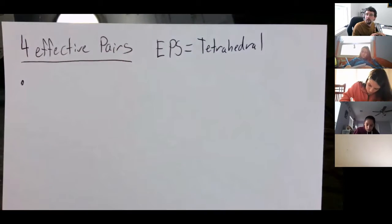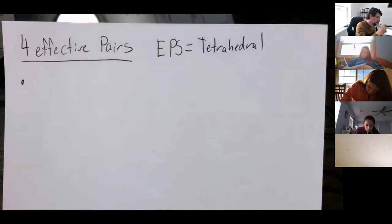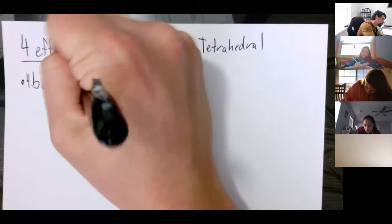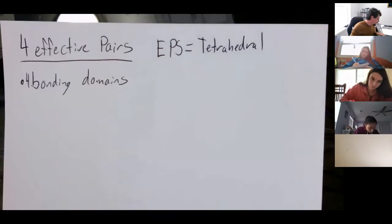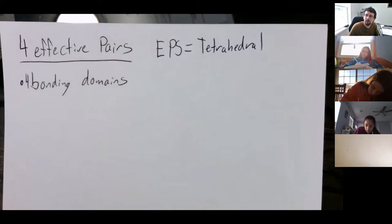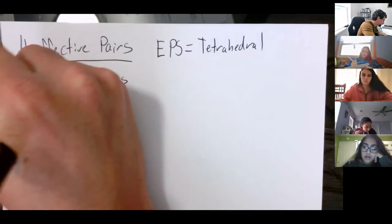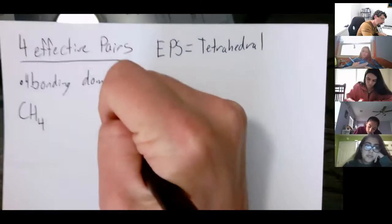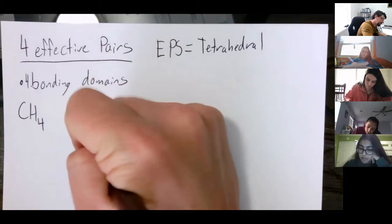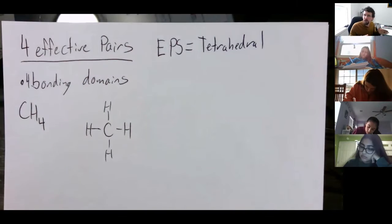The first case to consider is where we have four bonding pairs, or four bonding domains. Could you come up with a structure of a molecule that would have four bonding domains? Methane — yep, CH4. So the Lewis structure of that is pretty simple, but now we want to do a better three-dimensional representation.